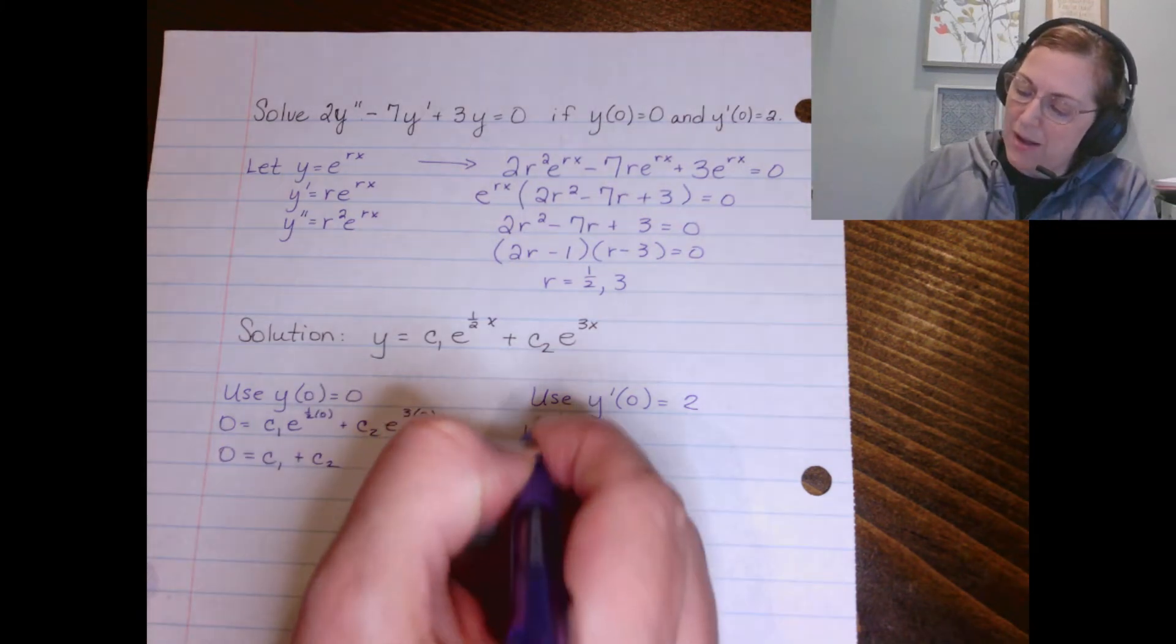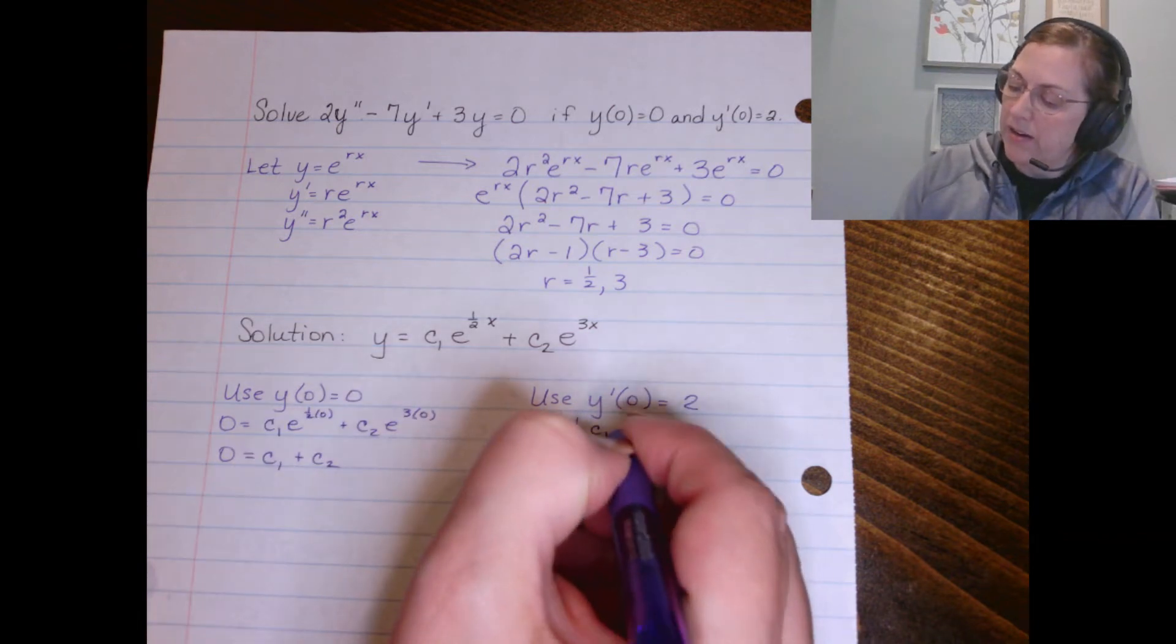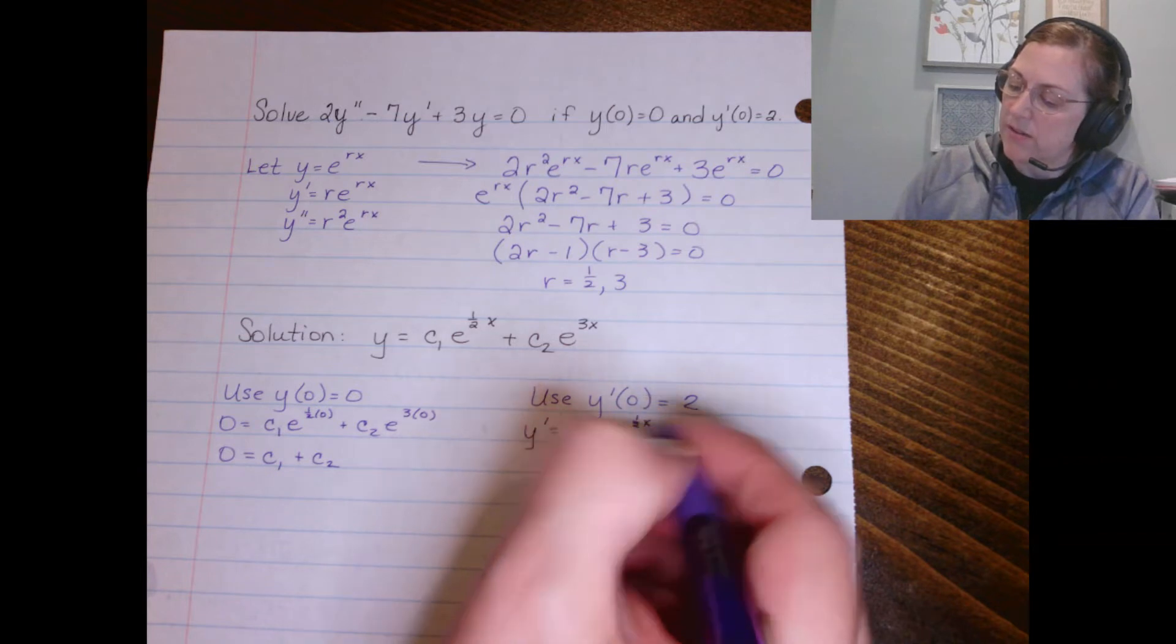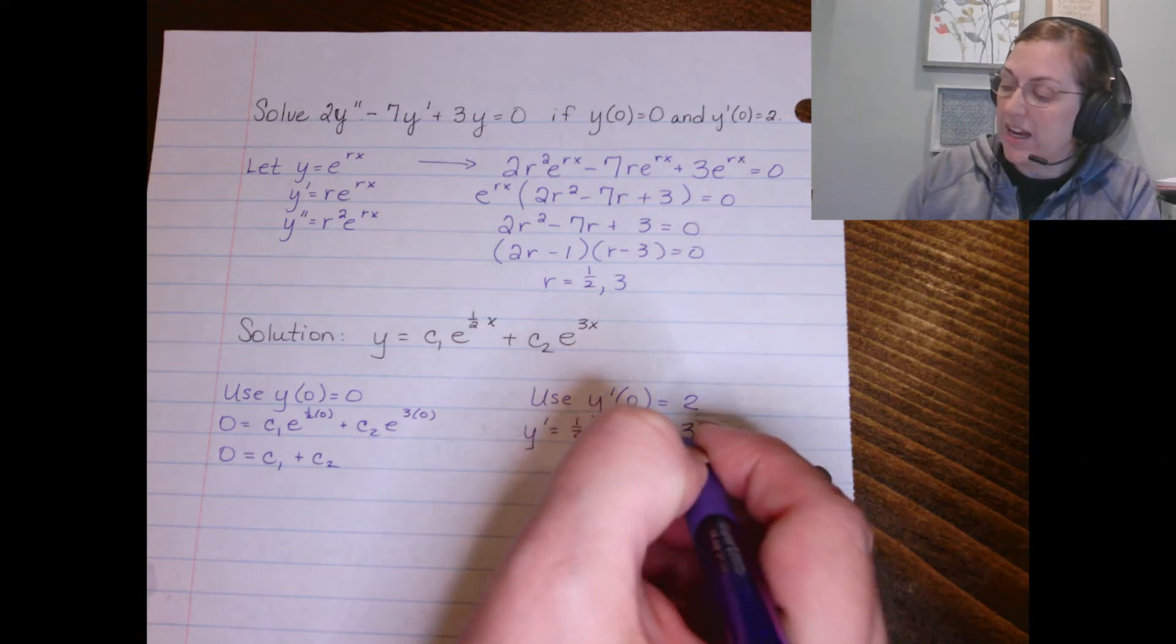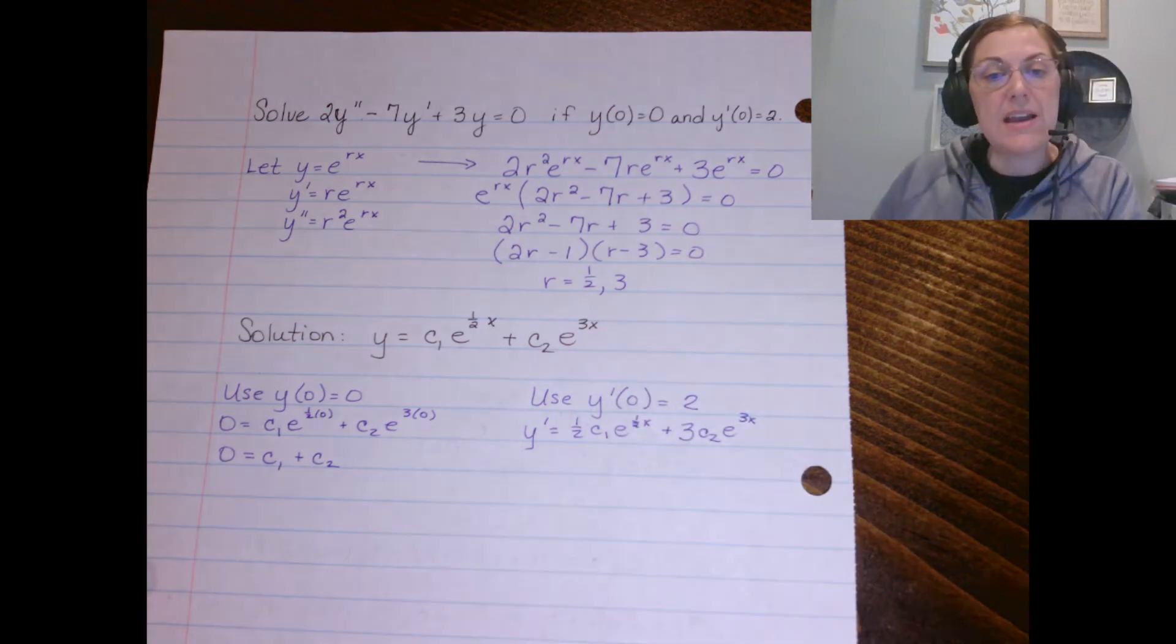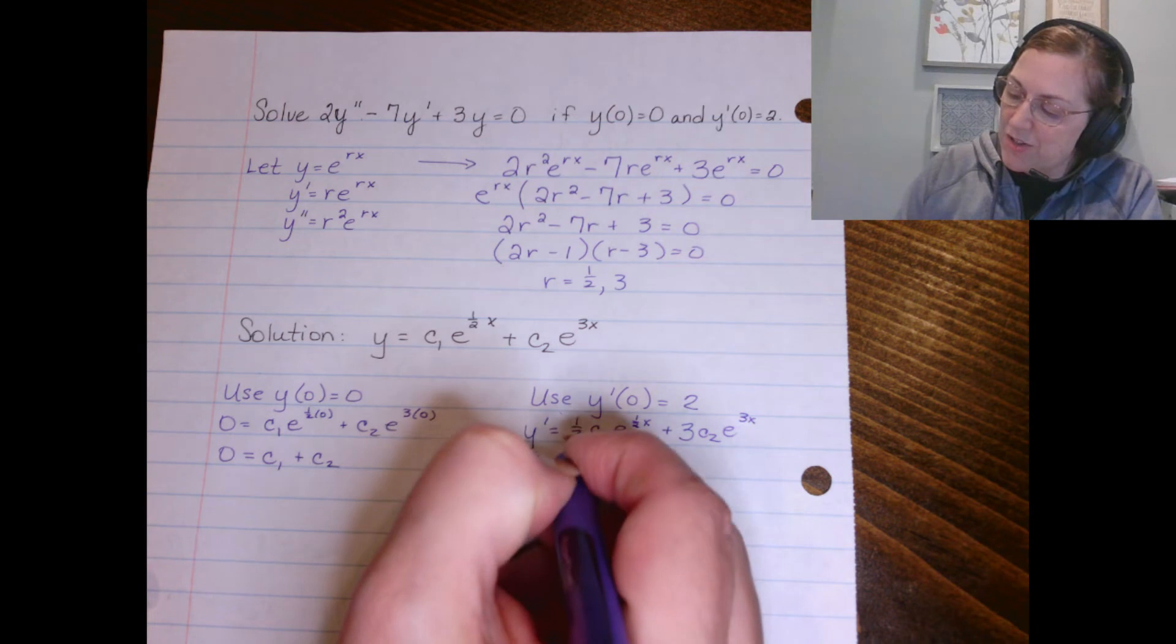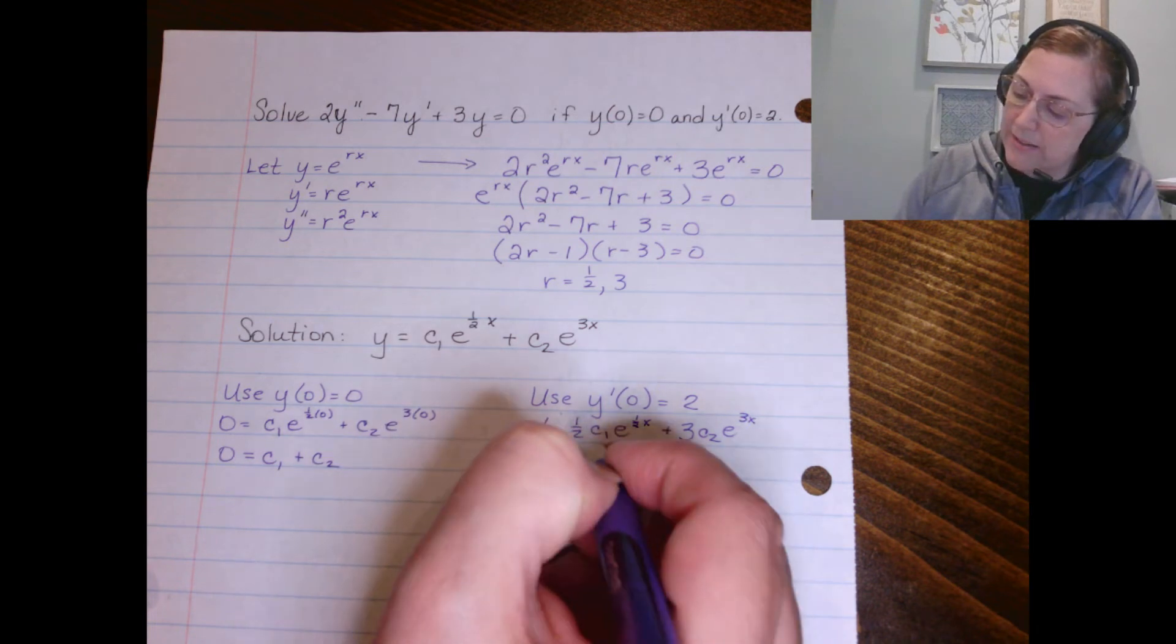So y' is 1/2 c₁ e^(1/2 x) + 3c₂ e^(3x), and now we can plug in our 2 for y' and our 0 for x.